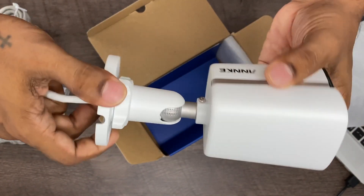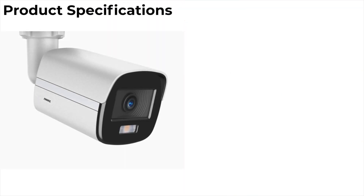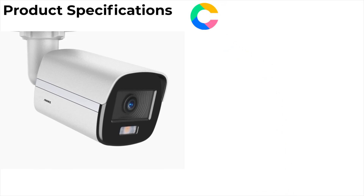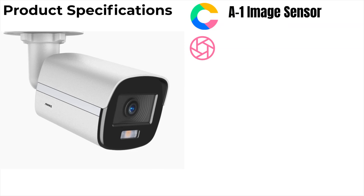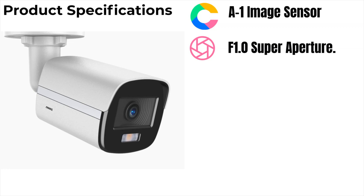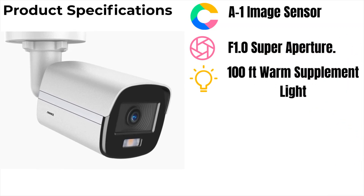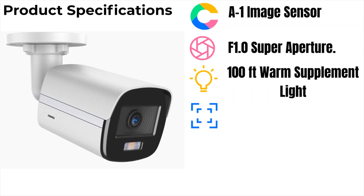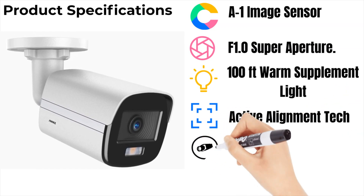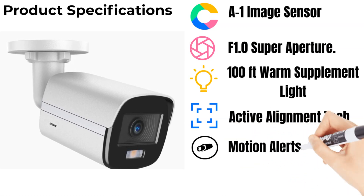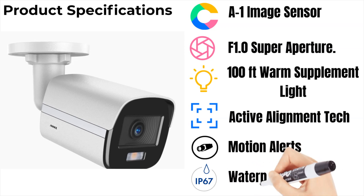Looking at the product specifications: the first is the image sensor, which increases photosensitive area by 180% with an A1 image sensor. The second is the aperture — an F1.0 super aperture that captures more light for brighter images. It also ensures full-color night vision in total darkness with a 100-foot warm supplemental light, accurate alignment within 4 pixels via active alignment technology, instant app push and email alerts with smart motion alerts, and IP67 weatherproof all-metal housing resistant to both cold and hot conditions.